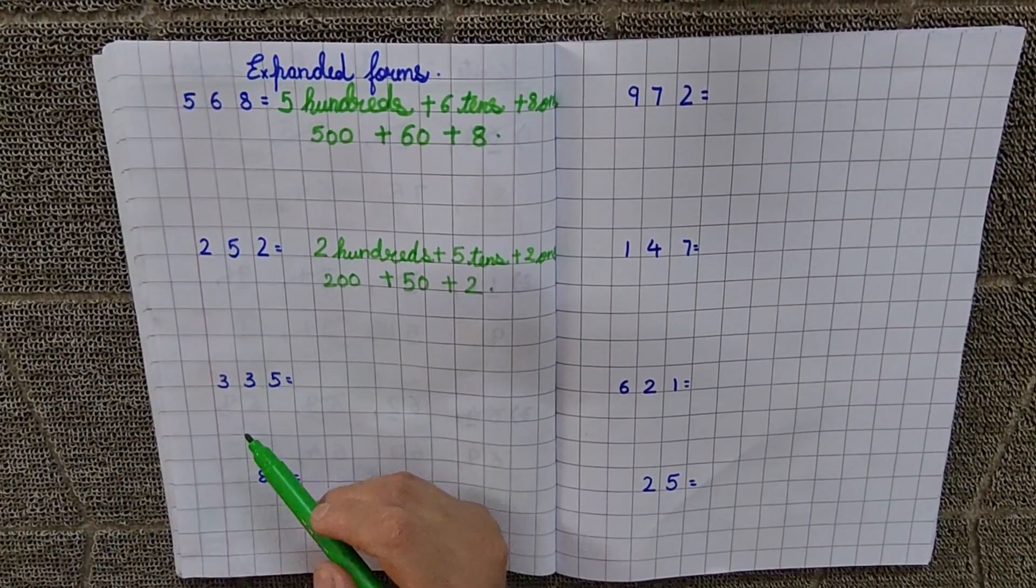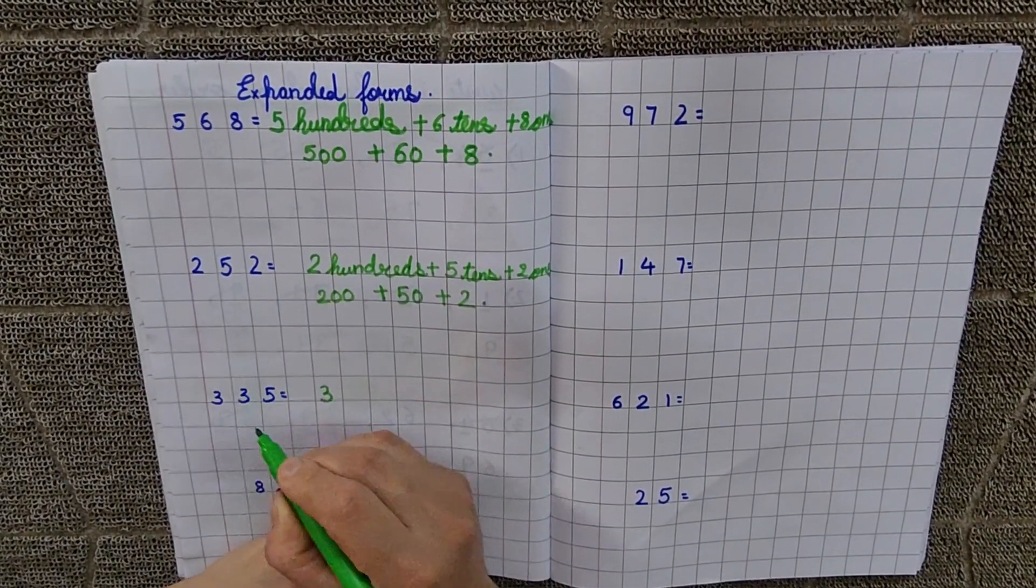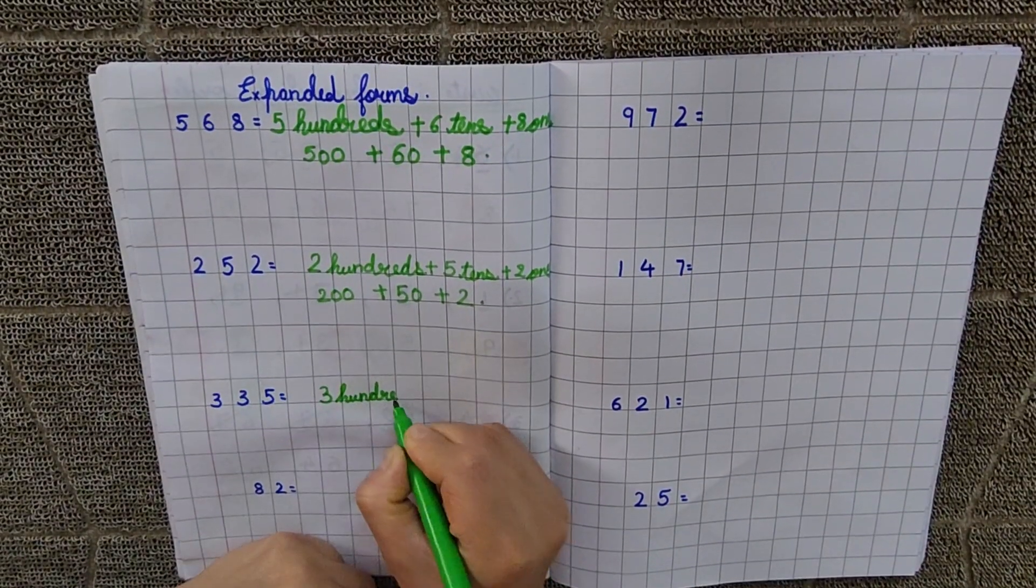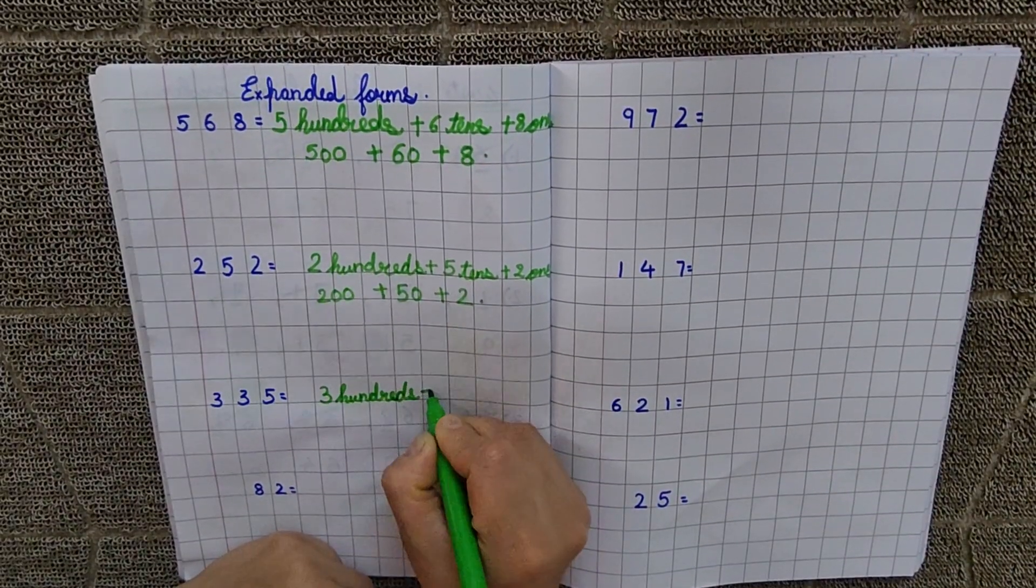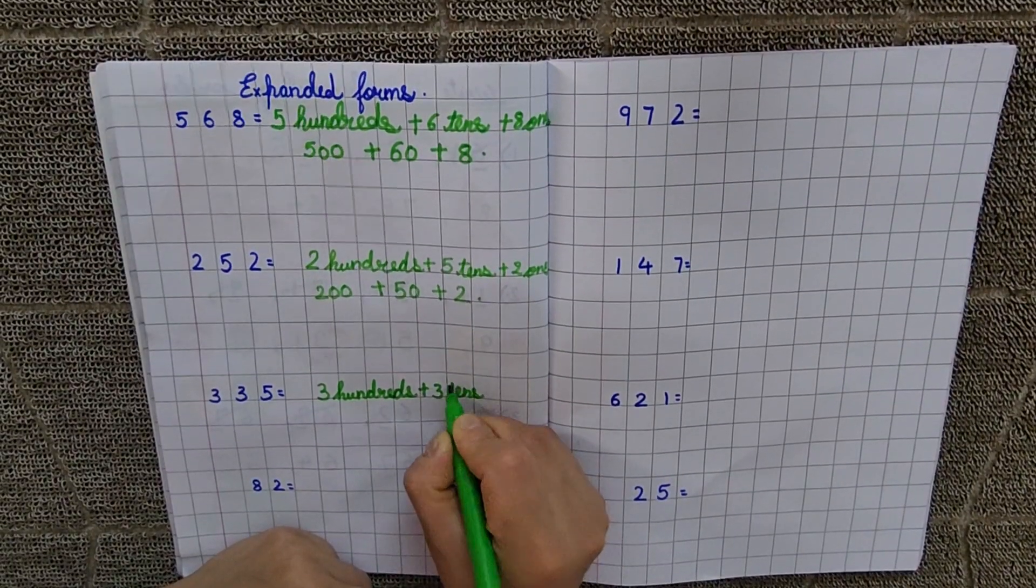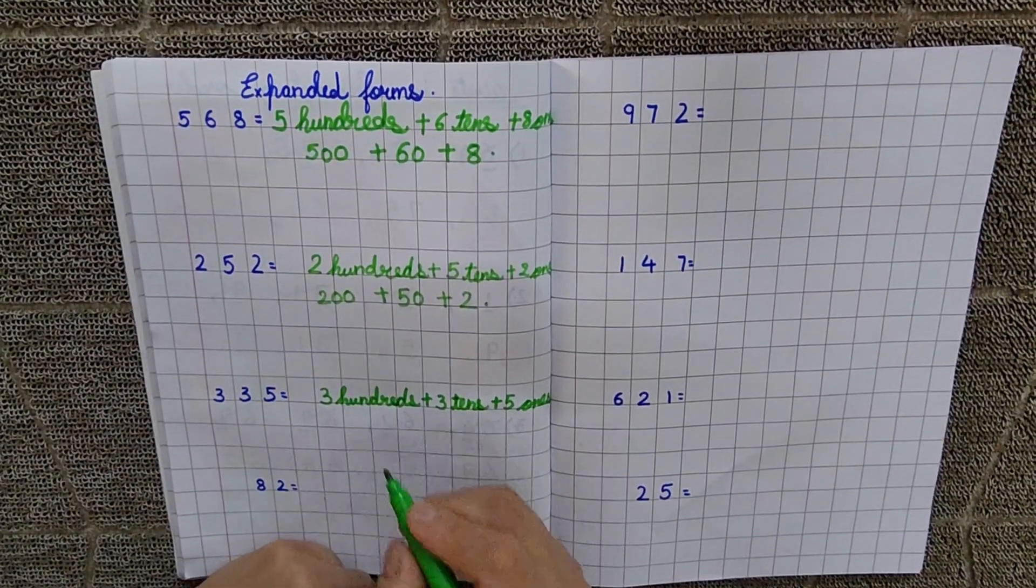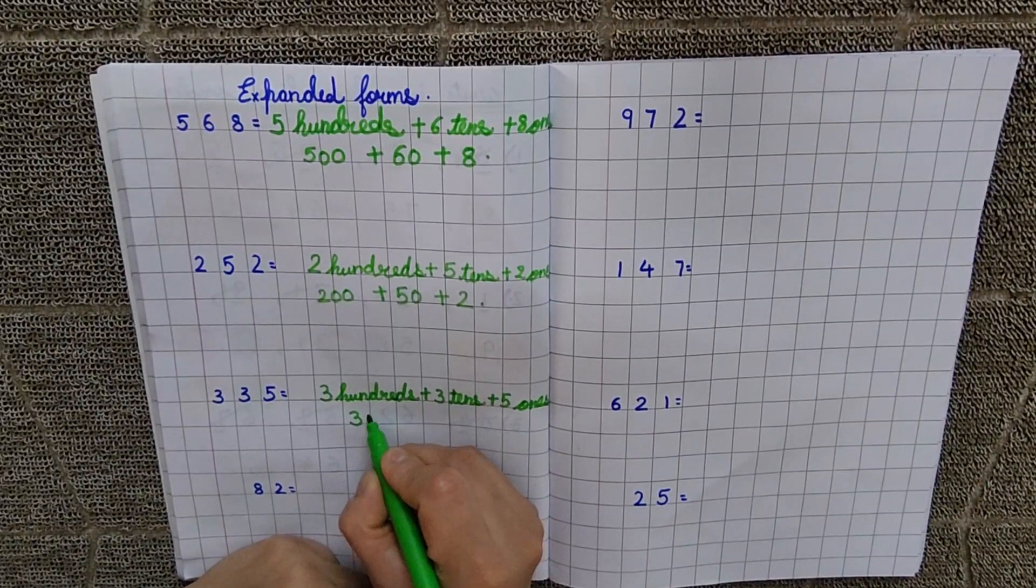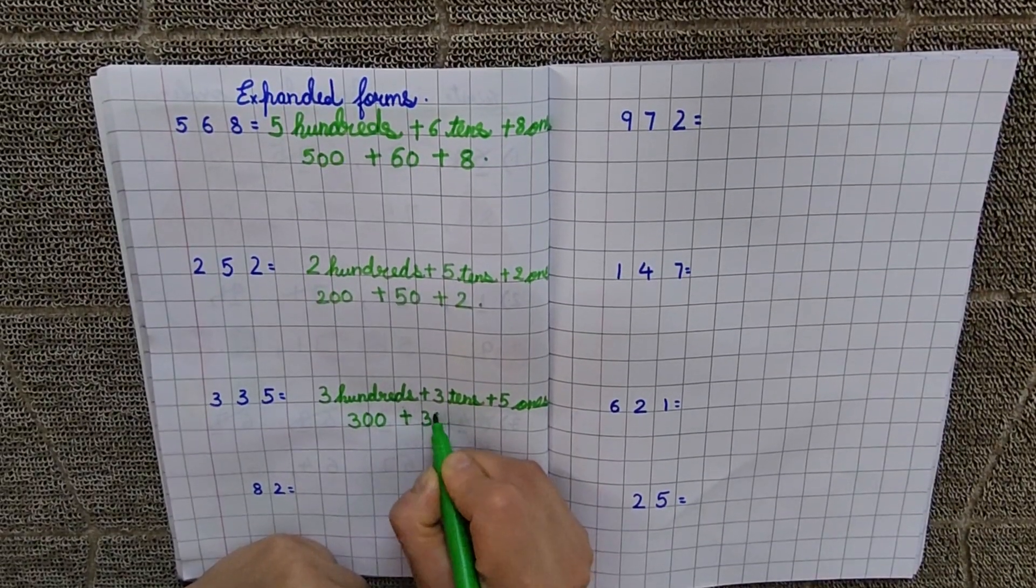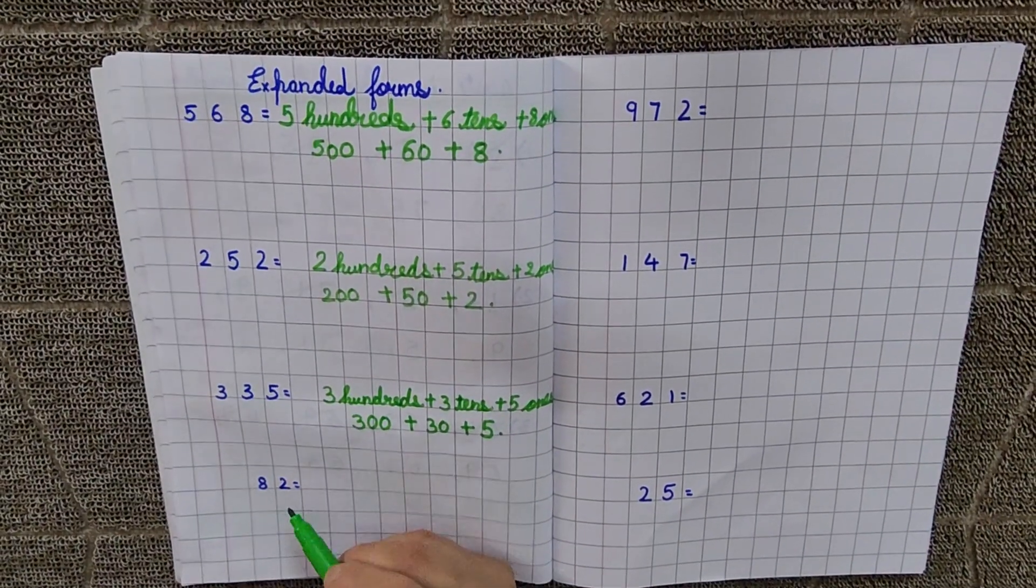Now, next is 335. Now, 3 hundreds plus 3 tens plus 5 ones. Now, we will put the zeros here. 100 kesat 2 zeros. 300 plus 30, 3 tens, plus 5 ones.